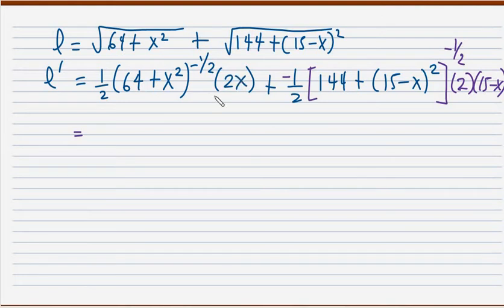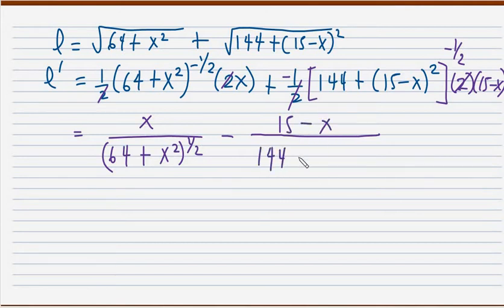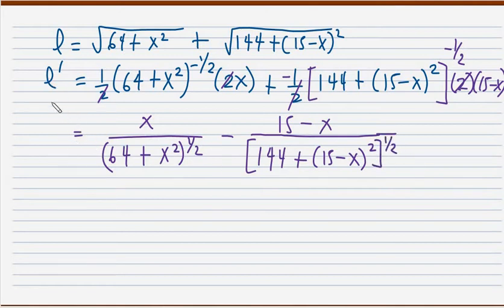Simplifying, the 2 and one-half cancel out, giving X over the square root of 64 plus X squared, minus (15 minus X) over the square root of 144 plus (15 minus X) squared. This is now our first derivative, which we equate to zero.